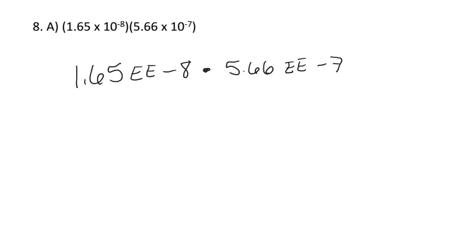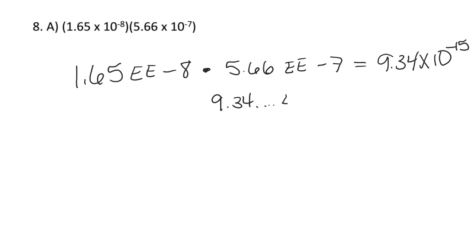When you do that, you get 9.34 times 10 to the negative 15. What it shows up as on the calculator is going to look like 9.34 — whatever digits it goes to — and then it's going to say E negative 15. Remember, on the calculator that EE stands for times 10.